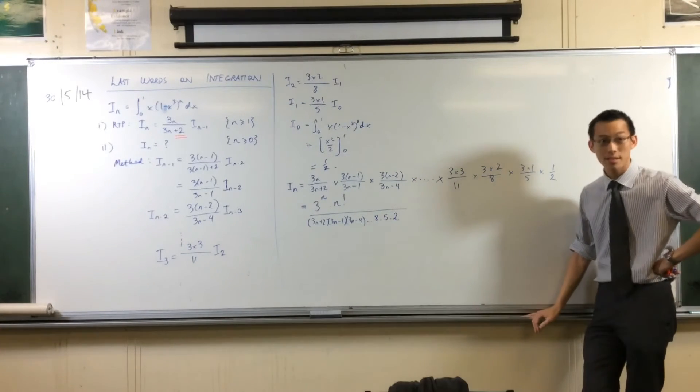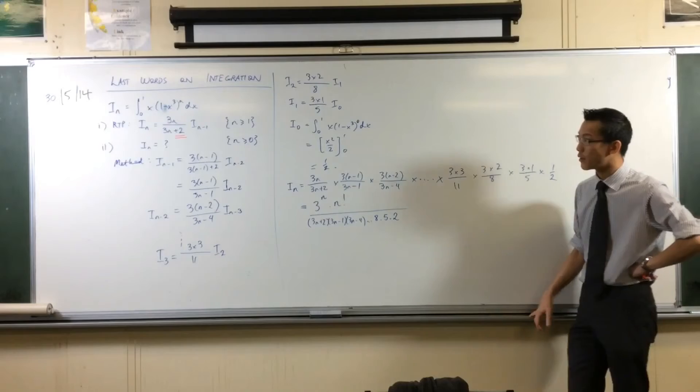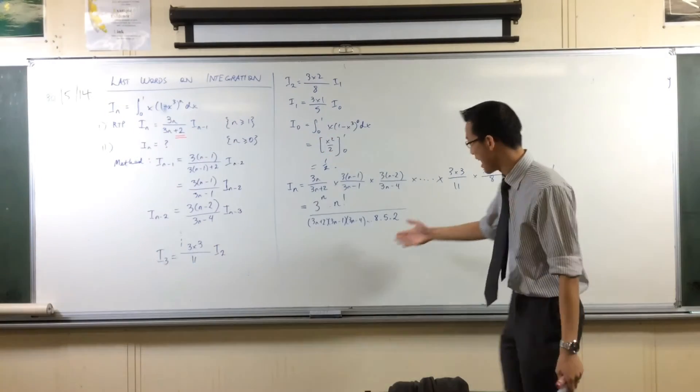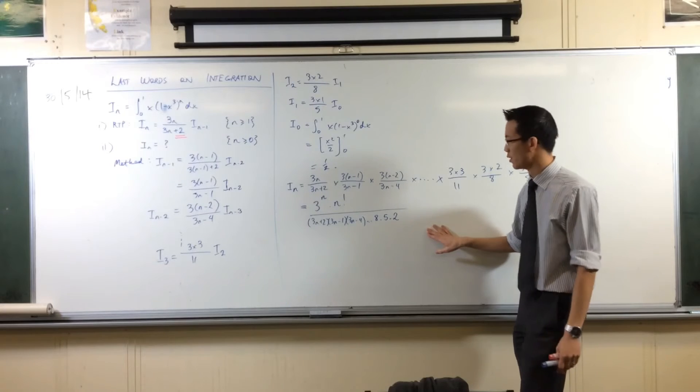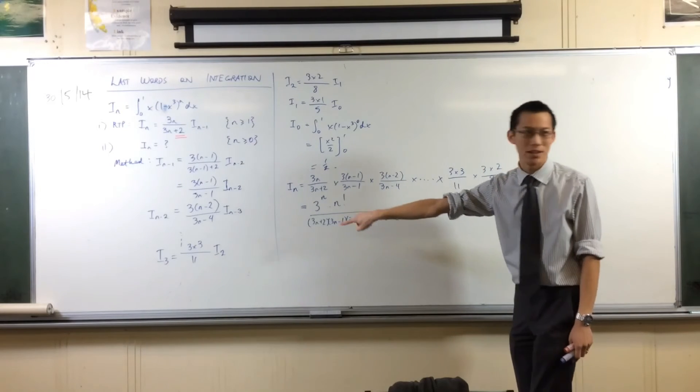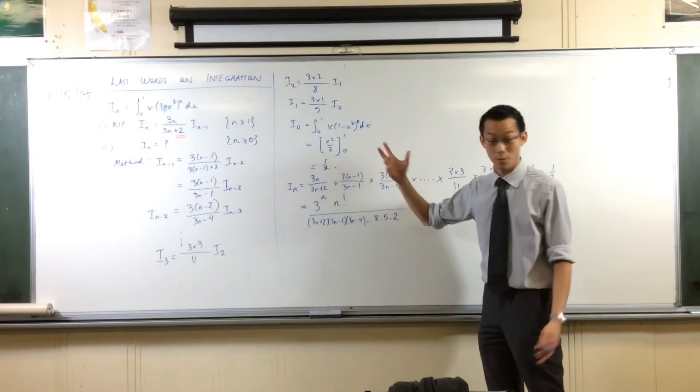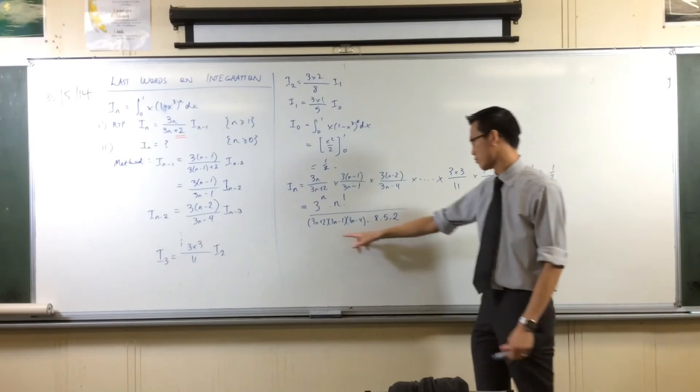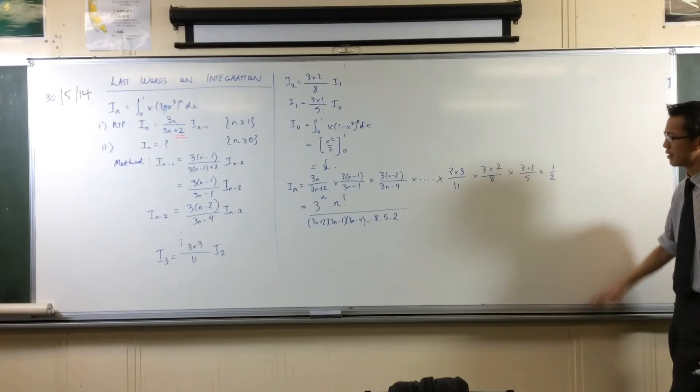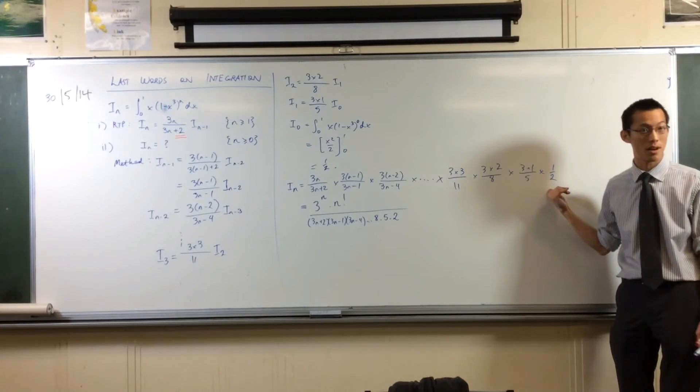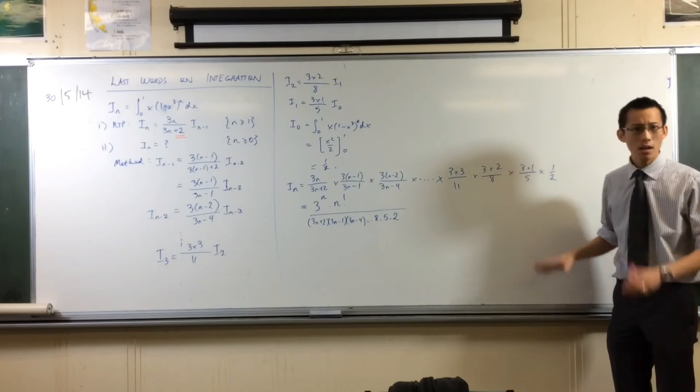So what is this? This is an expression for I_n, which we've used the recurrence relation, and we've used it till it ran out, which is why it doesn't have any recurrence relation in it anymore. And sure enough, you can stick zero into all of that. The zero factorial is one, three to the zero is one, and you'll get, well, what would be the first term? It'd be two, wouldn't it? So you'd get a half, which makes sense because we already know that I_0 is a half.